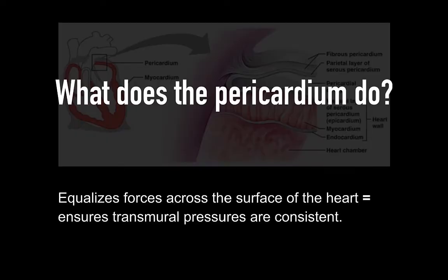The pericardium separates the heart from the lungs and equalizes the forces around the heart's surface. Additionally, it prevents cardiac distension and annular dilatation of the right heart given its relatively thin wall. Within normal right-sided pressures, 50% of right-sided diastolic pressures depend on it.